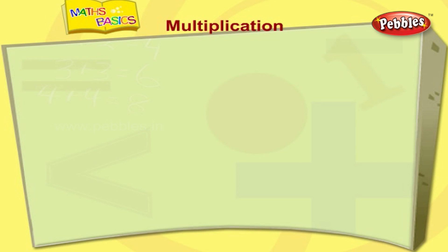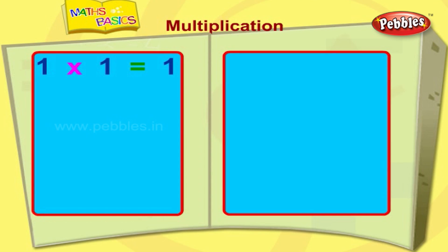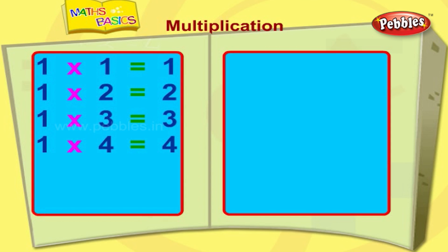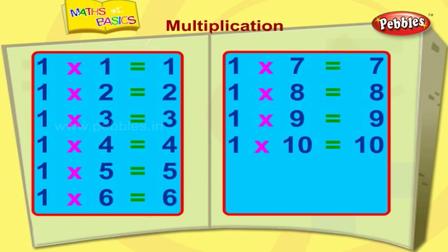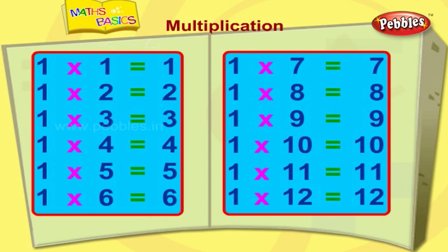Let's learn the multiplication tables. One ones are one. One twos are two. One threes are three. One fours are four. One fives are five. One sixes are six. One sevens are seven. One eights are eight. One nines are nine. One tens are ten. One elevens are eleven. One twelves are twelve.